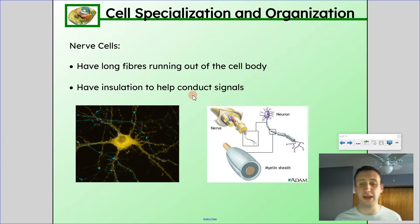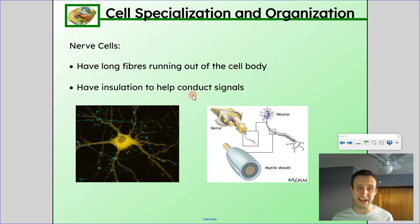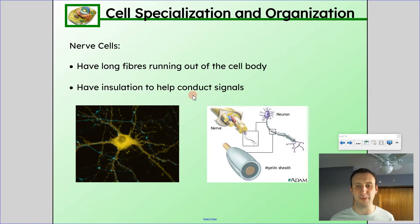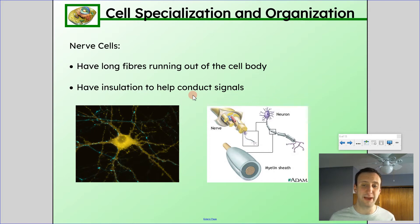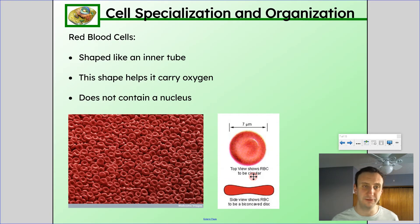We're going to take a look at a few different types of cells and talk about how each is different. For example, nerve cells have long fibers running out of the cell body, and these fibers connect to other nerve cells, creating connections between them. They also have insulation called the myelin sheath that helps conduct signals, allowing signals to travel more quickly. When we talk about MS — multiple sclerosis — that is normally because of an issue with this myelin sheath.